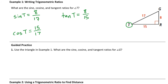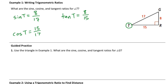In the guided practice, I'd like you to write the ratios, but instead of using T as our reference angle, use G as your reference angle. Find the sine of G, the cosine of G, and the tangent of G. Write those ratios out to get used to setting up the equations. Pause the video, work through these, and then I'll work on example 2.